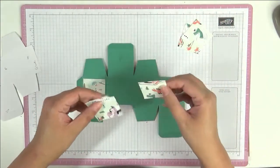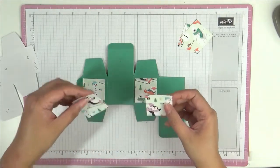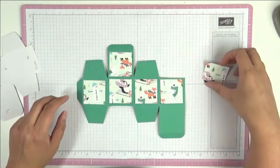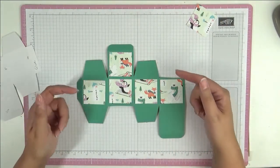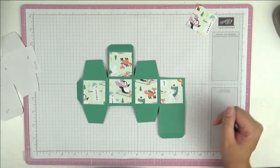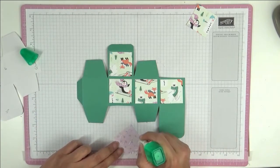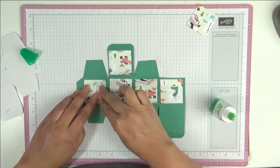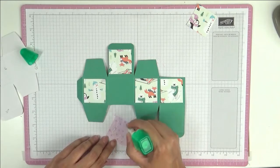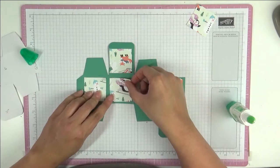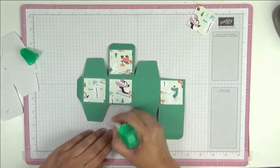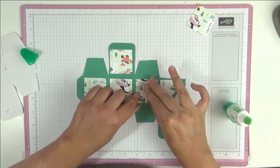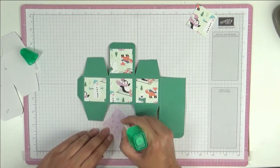We need to put our designer series paper down and decide what patterns we want to go where. Make sure you are having the right orientation so when it is facing up, it will all be facing the right way. Let's stick this down. This is the penguin paper, and these pieces measure one and three quarter inches squared. They are just going to fit really easily.